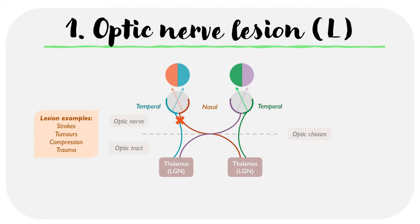The way of thinking about this is by looking at which lines are affected. In this case the blue and red lines are impaired. Tracing the blue line up, it corresponds to the temporal retina on the left side, so when disrupted we lose the nasal visual field in the left eye. The red line is also affected, so we lose the nasal retina of the left eye and subsequently the temporal visual field. This results in a left anopia — the entire left eye is unable to generate an image.